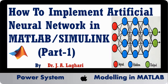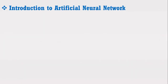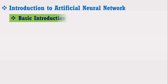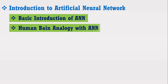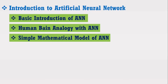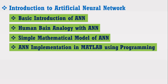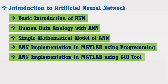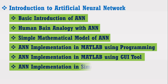In the whole artificial neural network series, the following topics will be covered: 1. Basic introduction of the ANN. 2. Human brain analogy with the ANN. 3. Simple mathematical model of the ANN inspired from the human brain. 4. ANN implementation in MATLAB using programming. 5. ANN implementation in MATLAB using the GUI tool. 6. ANN implementation in Simulink.